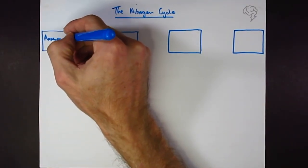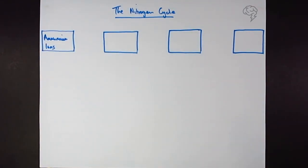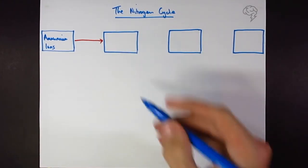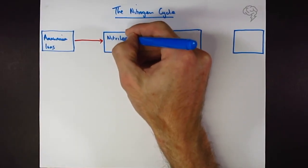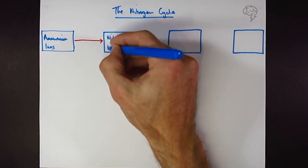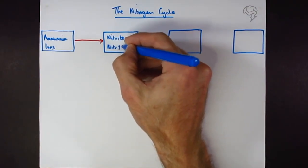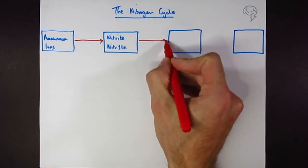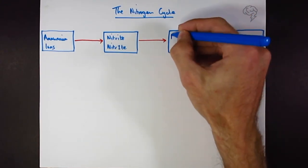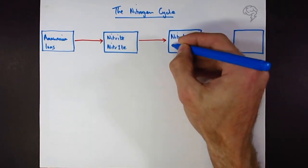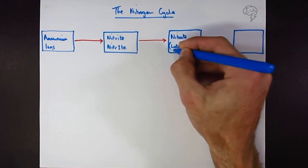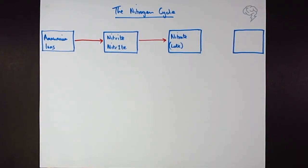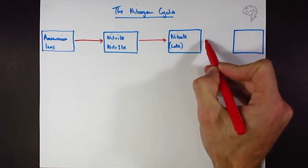So this is ammonium ions — A for ammonium. The direction of flow goes like this: ammonium ions are transformed into nitrite — I write this with a number one because it comes first. The next step is nitrate, which I label with 'late' to remember it comes after nitrite. We start with A at the beginning of the alphabet, then nitrites, then nitrates — you need to spell them correctly because they are very easily confused.